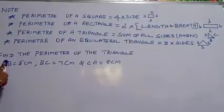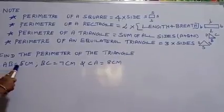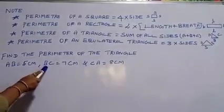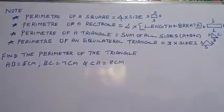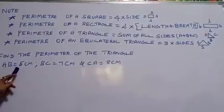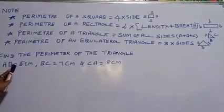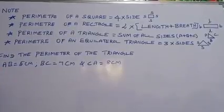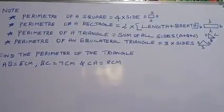So, first problem: find the perimeter of the triangle. Here I am given AB equal to 5 cm, BC equal to 7 cm, and CA equal to 8 cm. Listen children, whatever they give in, first you have to check whether it has an equilateral triangle or any other triangle — you have to check first.